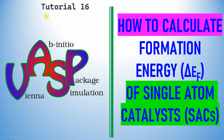This is tutorial 16 in VASP. In this video you can learn how to calculate the formation energy of a single atom catalyst. Formation energy is an important parameter to identify the stability of the catalyst — if the formation energy is more negative, it is a stable form; if it is more positive, it is very difficult to form.